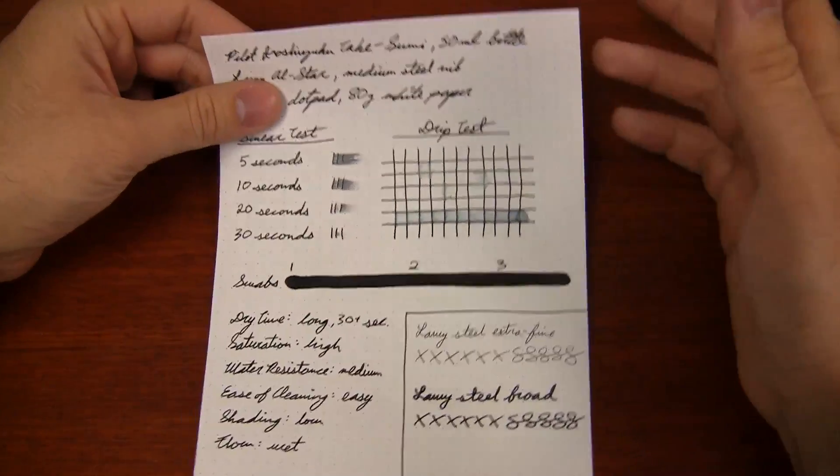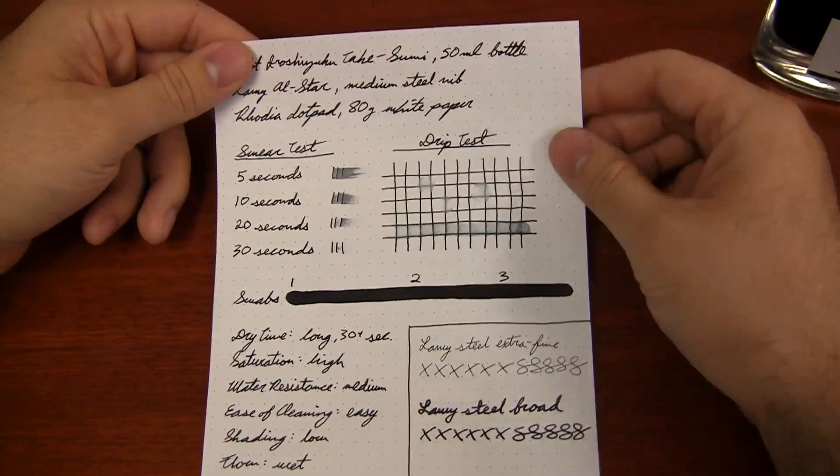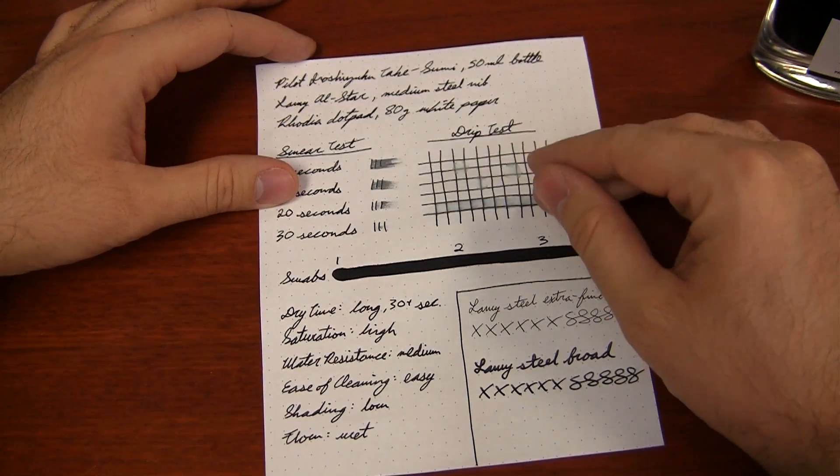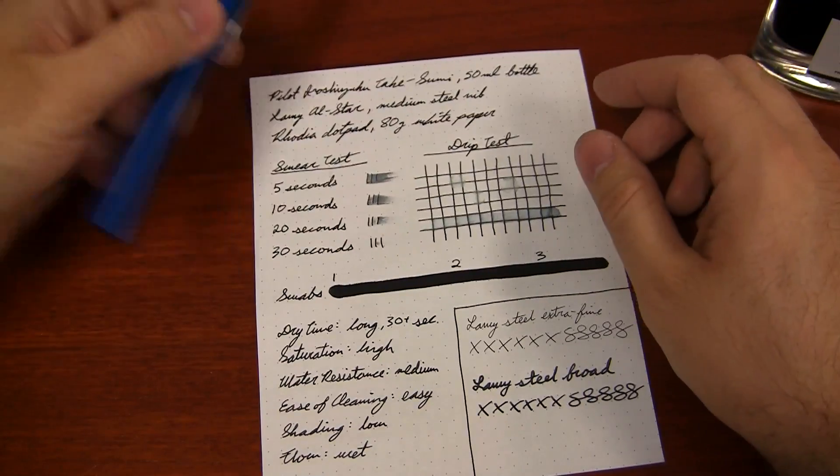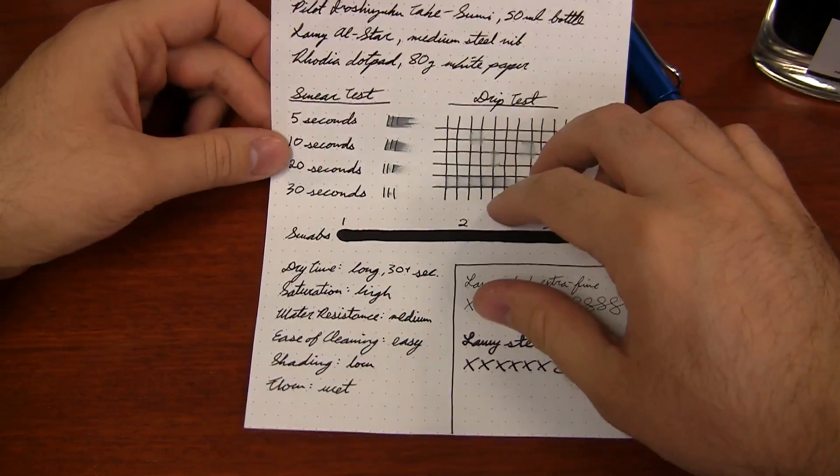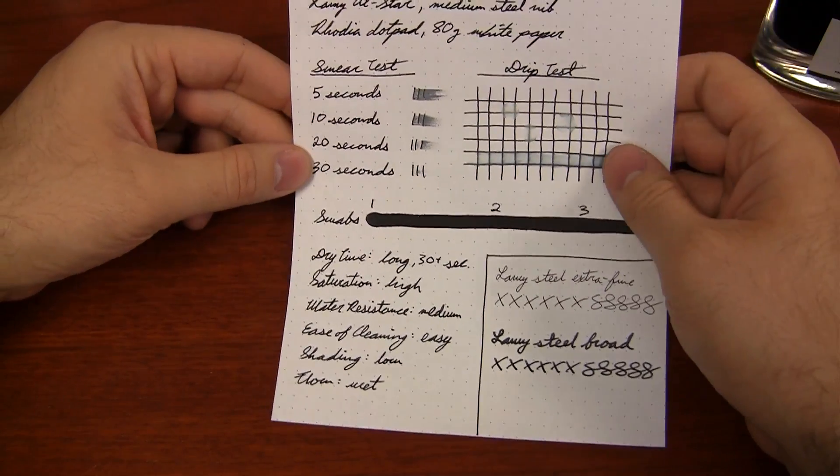Okay, so I used Rhodia 80 gram dot pad white paper. It's one of my favorite papers. It is very ink resistant. So dry time is usually quite extended on this paper versus some others. I used a Lamy All-Star with a medium steel nib. And in testing the ink, I did find the dry time to be a little bit longer than what I was hoping.